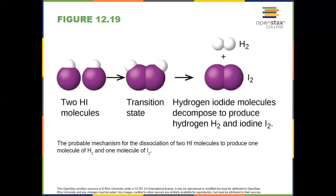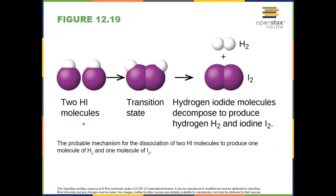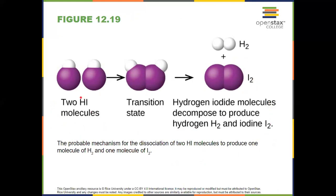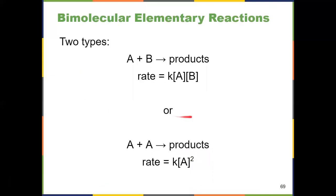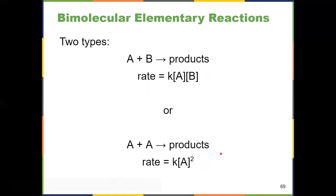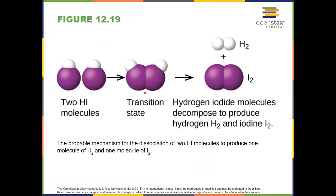The decomposition of hydrogen iodide, HI, is a bimolecular elementary reaction. The overall reaction would be 2HI → H₂ + I₂. This is the second type — bimolecular with respect to the same reactant, HI. Two molecules come together, they collide, they're in a transition state, and then we get our products: hydrogen and iodide.